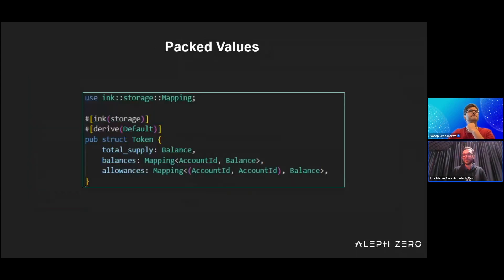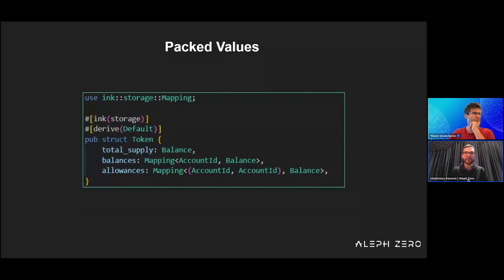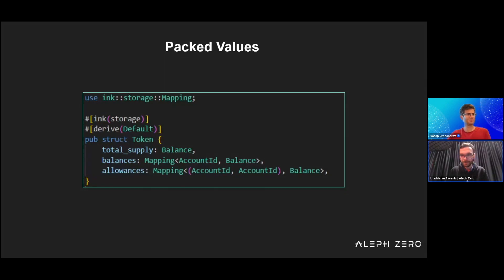Let's return to our code snippet and talk about packed values. By default, if you remember, we use this SCALE encoder and it encodes everything and stores everything in cells. So by default every value is packed — that means every value will be stored under the same cell and keep everything together neatly. So if you address something and use these stored values, they will be loaded from storage into your smart contract and you would be able to operate on everything.